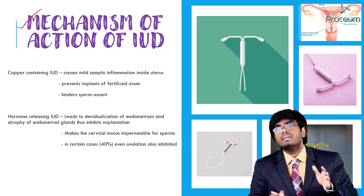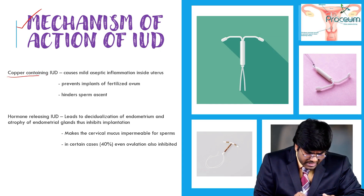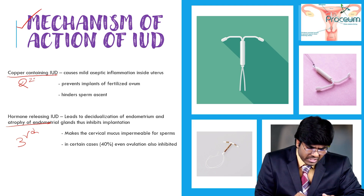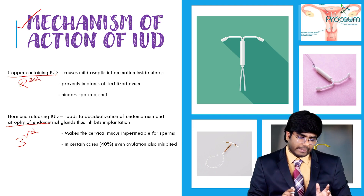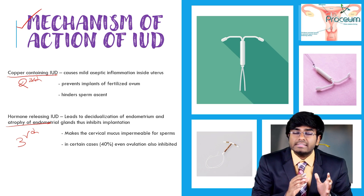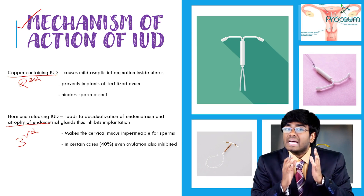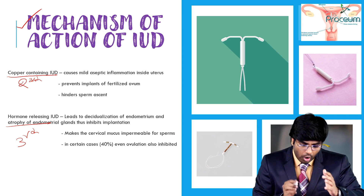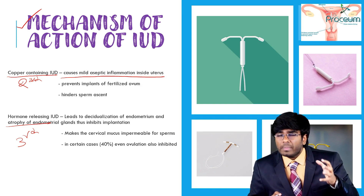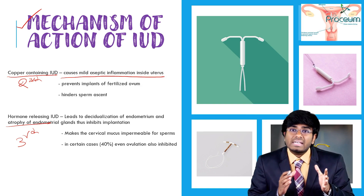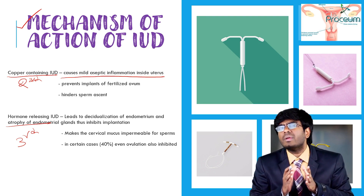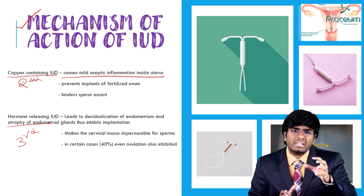Now let's discuss the mechanism of action of IUDs, focusing on second and third generation, since first generation is no longer used. Copper-containing IUDs release copper, which causes aseptic inflammation inside the uterus. When copper acts on the endometrium, there will be mild inflammation.